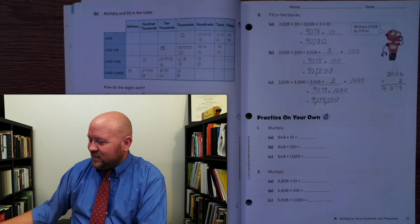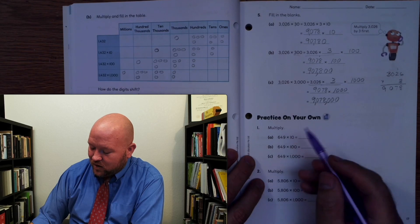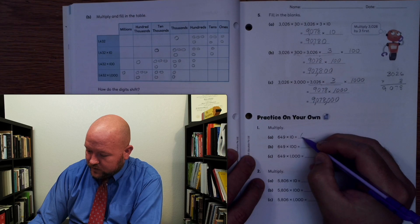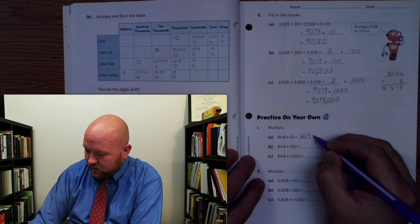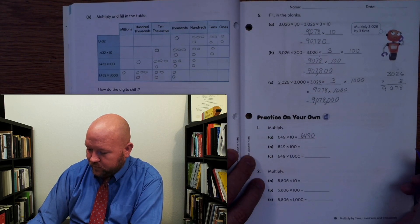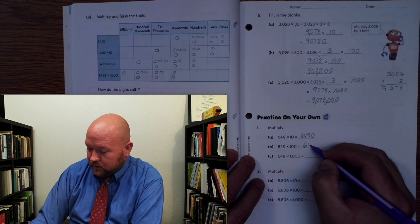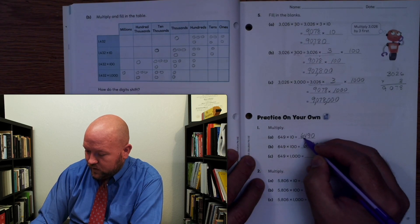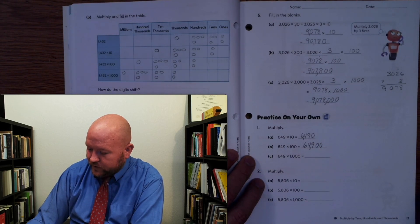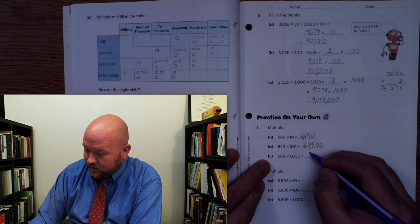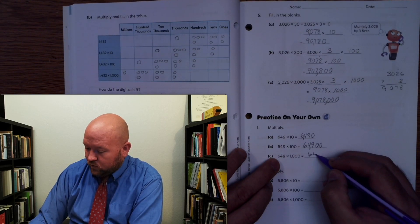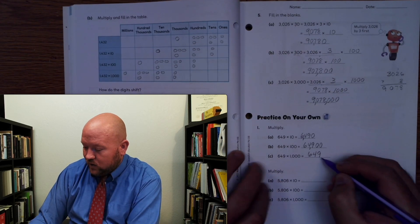Let's look at these together. Here we have 649 times 10 — let's just shift the value over 1: 649 with one zero on the end. Same thing but moving over 2: 649, 0, 0. And to 10,000: 600,000 plus 40,000 plus 9,000 — and I just need those place value holders on the end.